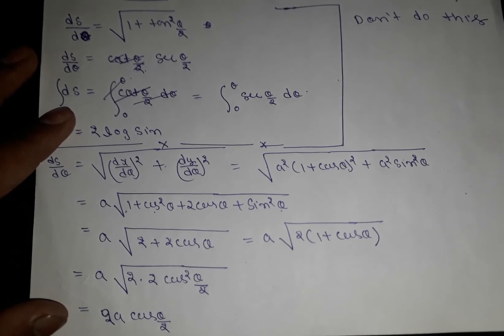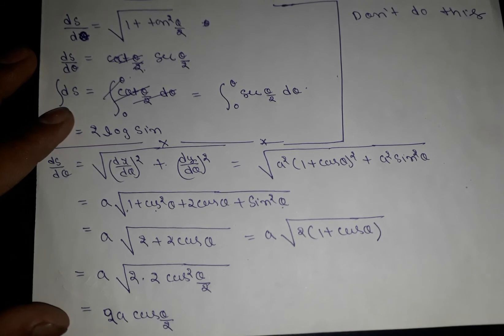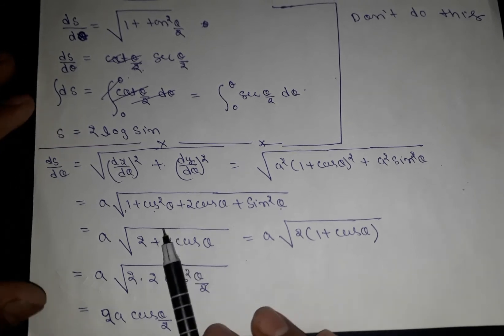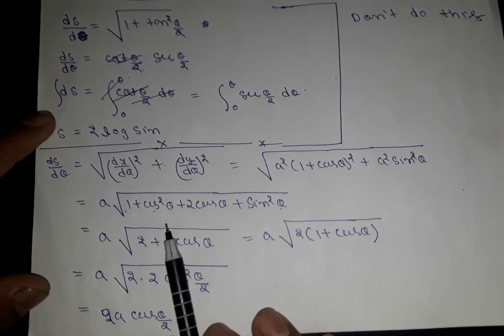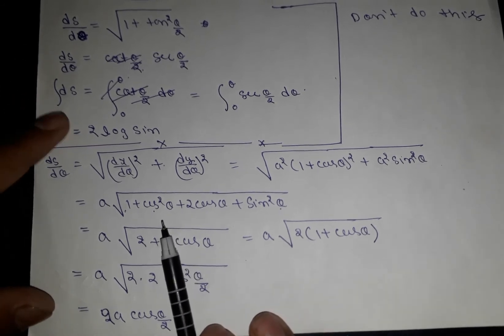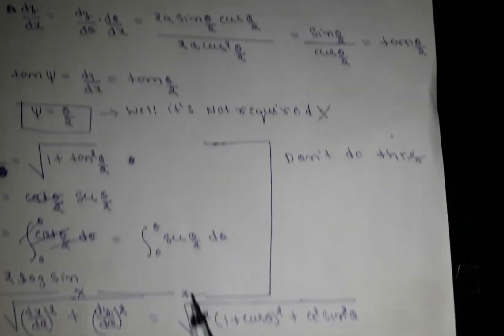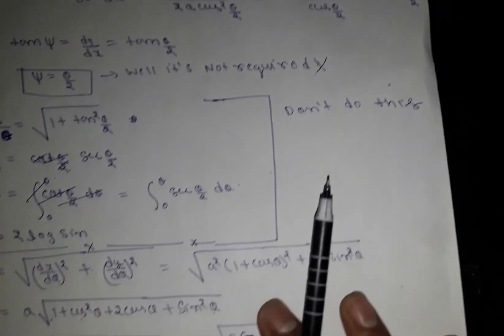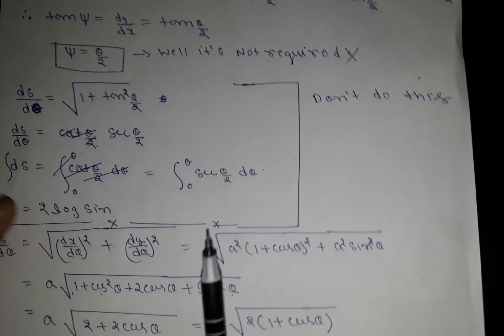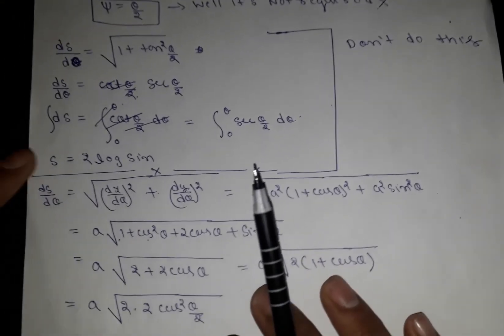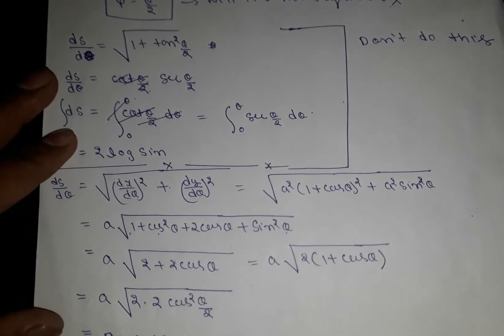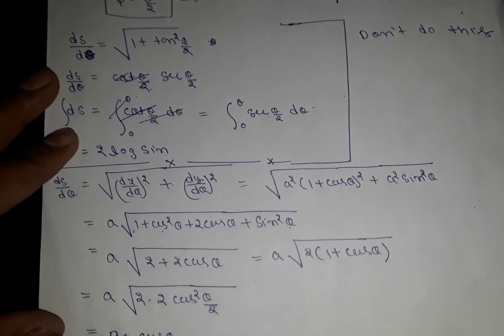Here I explained the concept of arc length, and the same concept applies here. The intrinsic equation is one that is free from x and y — it is an independent equation not involving x and y, expressed in terms of arc length s and angle ψ. That is what we call the intrinsic equation.